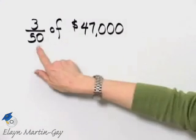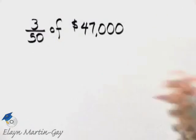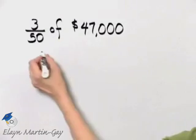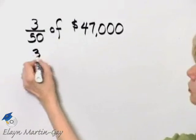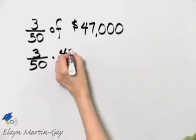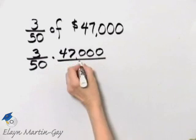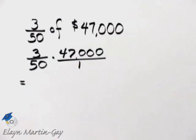So how do we find 3/50 of this number? We multiply because 'of' normally means multiplication. So we want to find 3 over 50 times 47,000. I'll write it over 1. How do we multiply fractions?